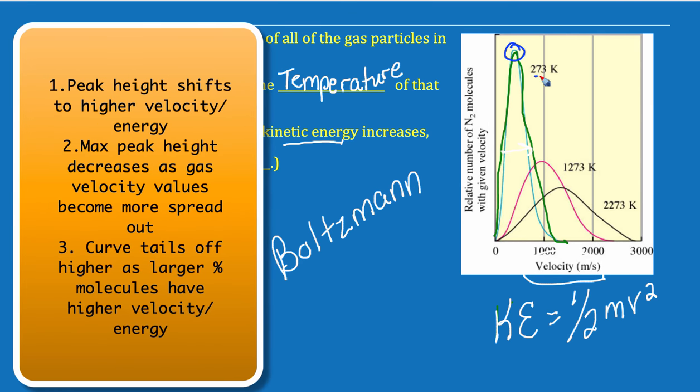temperature increases. So, this is lower than this temperature. Notice that the peak height shifts to higher velocity and higher kinetic energy molecules. Notice that the distribution spreads out over a broader range. So, there's a much broader range of velocities. And it typically will tail off a little higher.